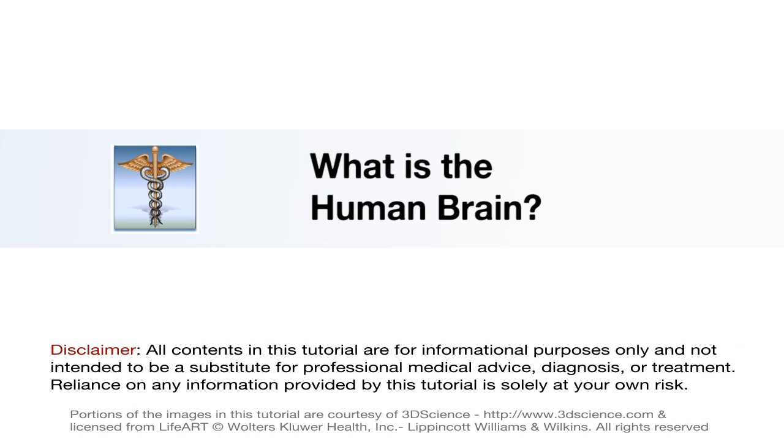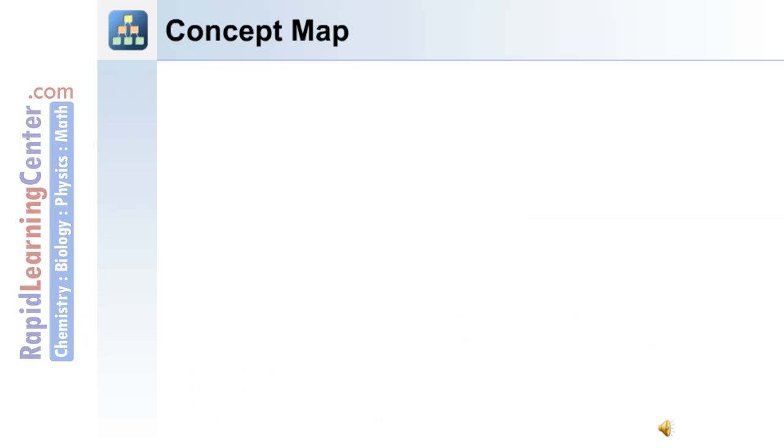Let's begin with an overview of the human brain, the brain and cranial nerves concept map.